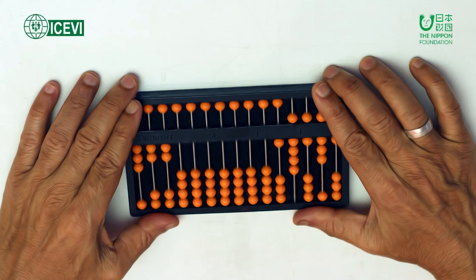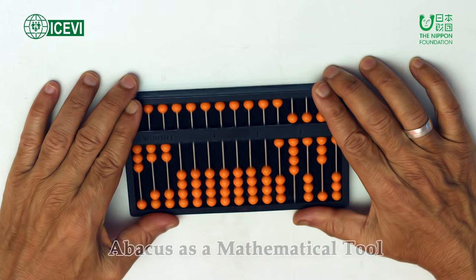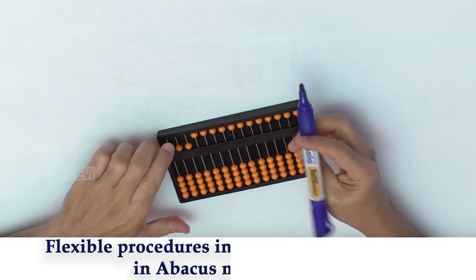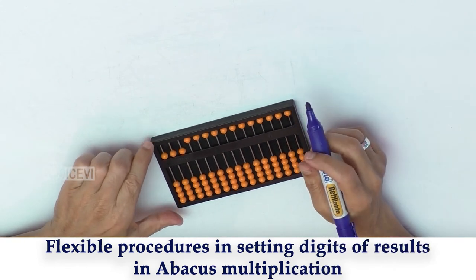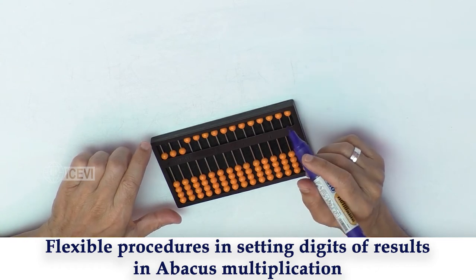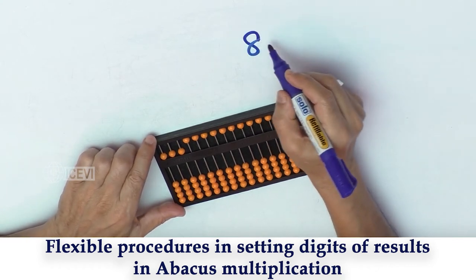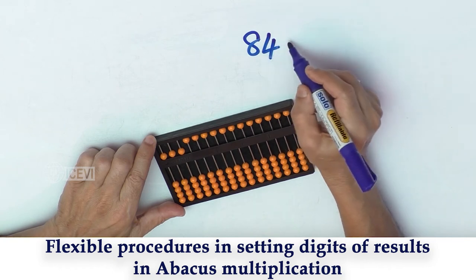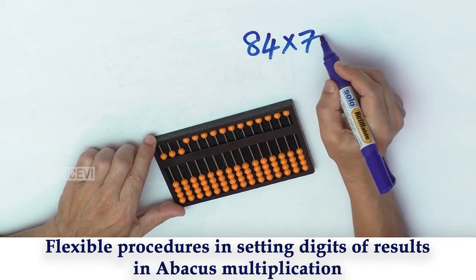The I.C.E.V.I. The Nippon Foundation Mathematics Package for Teachers Video Series: Abacus as a Mathematical Tool. Title of the video: Flexible Procedures in Setting Digits of Results in Abacus Multiplication. Let us take the example 84 multiplied by 73.